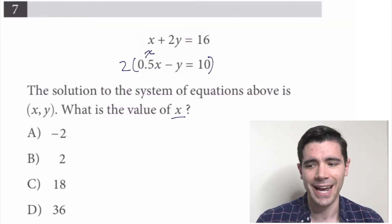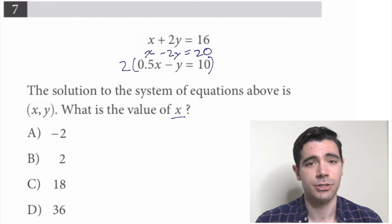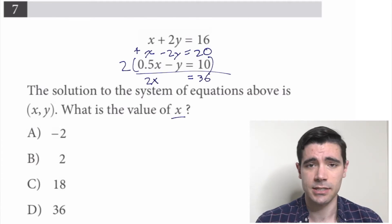Distribute this 2, we get x minus 2y equals 20. Stack that right under our x plus 2y equals 16, and we can combine the two equations. x plus x is 2x. 2y minus 2y, well, that's 0. They drop out. Goodbye, y. And then 16 plus 20 is 36. So now we have 2x equals 36. Divide both sides by 2, and x equals 18.